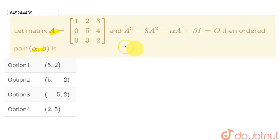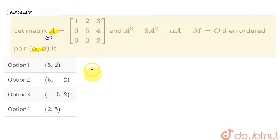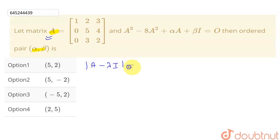The characteristic equation of this matrix will have a cube term — A³. So let me find A³ by writing the characteristic equation of this matrix, defined as the determinant of A minus λI equal to 0.